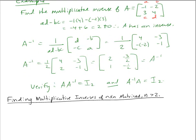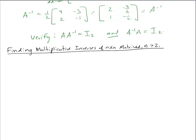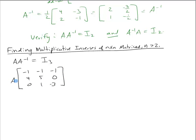Now let's look at finding multiplicative inverses of n-by-n matrices where n > 2, such as 3×3 or 4×4. To find the inverse of the 3×3 matrix A = [-1,-1,-1; 4,5,0; 0,1,-3], we assume it's invertible and use A × A⁻¹ = I₃. We denote elements of A⁻¹ using variables x₁,x₂,x₃ for the first column, y₁,y₂,y₃ for the second, and z₁,z₂,z₃ for the third.